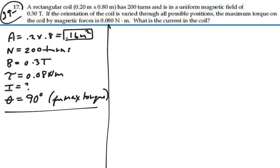So, we have that the magnitude of the torque should be equal to N I A B sine theta, and hence the current is going to equal the torque divided by N A B sine theta.